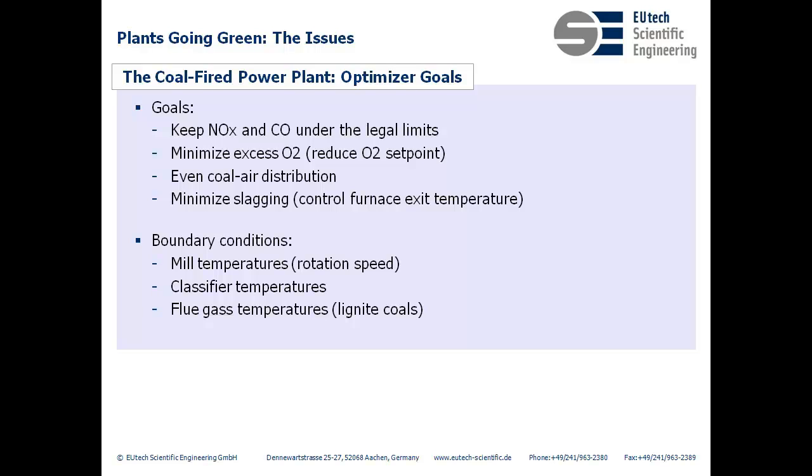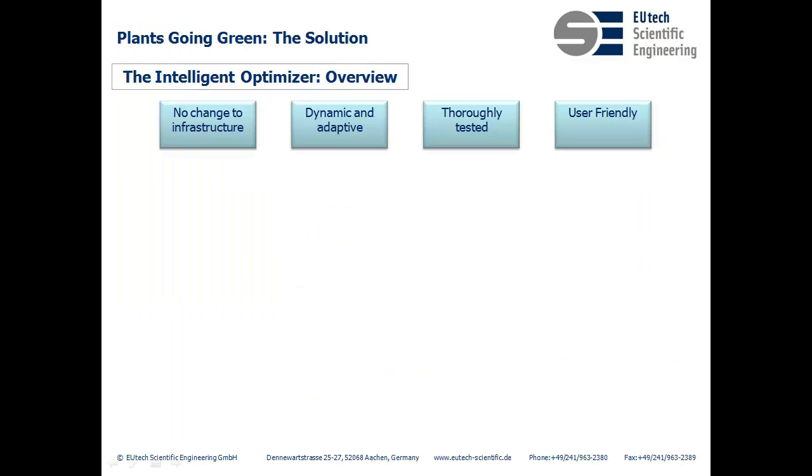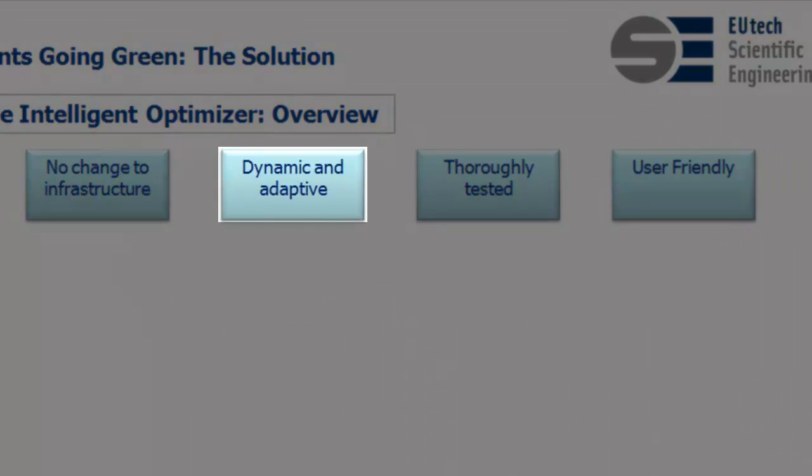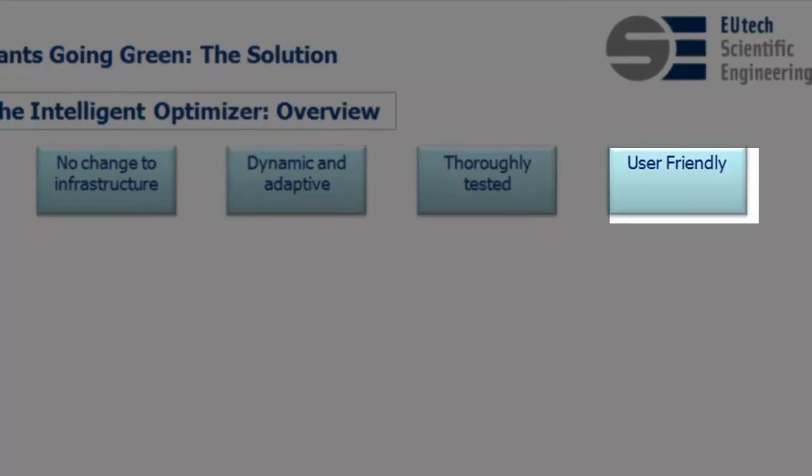Now that we have the issues and goals behind us, we'll move on to see what the solution looks like. Here are the big picture goals for the optimizer: no change to infrastructure, it must be dynamic and adaptive, it should be thoroughly tested, and of course user-friendly.